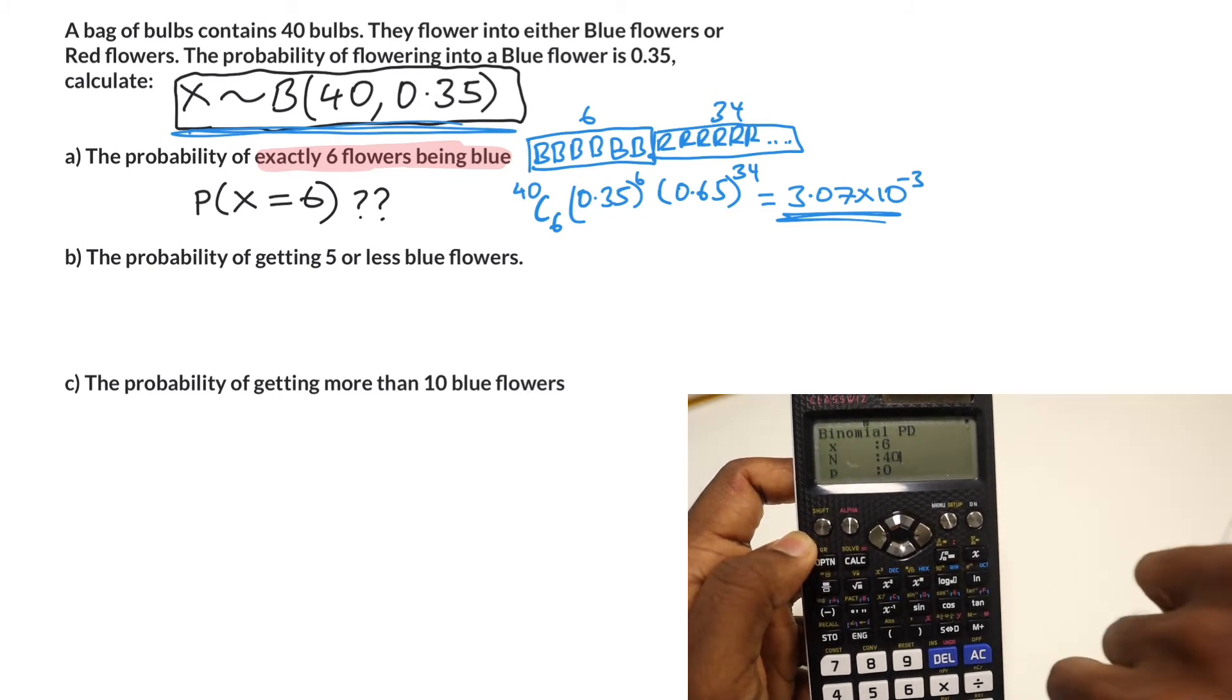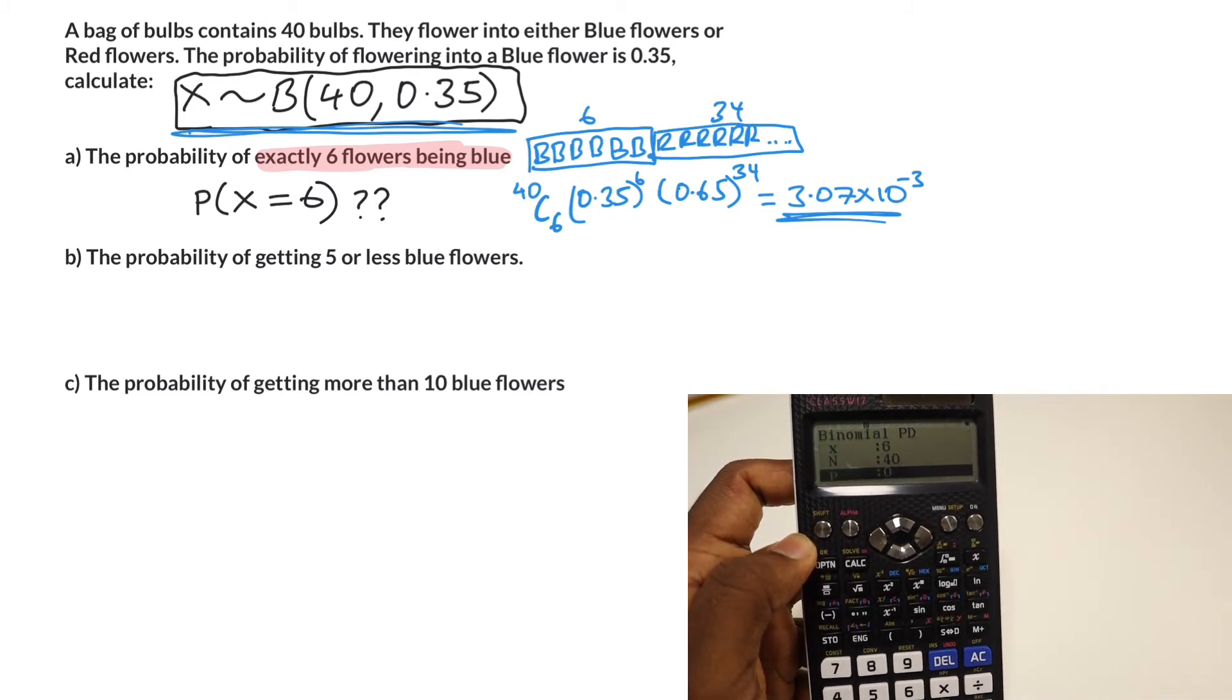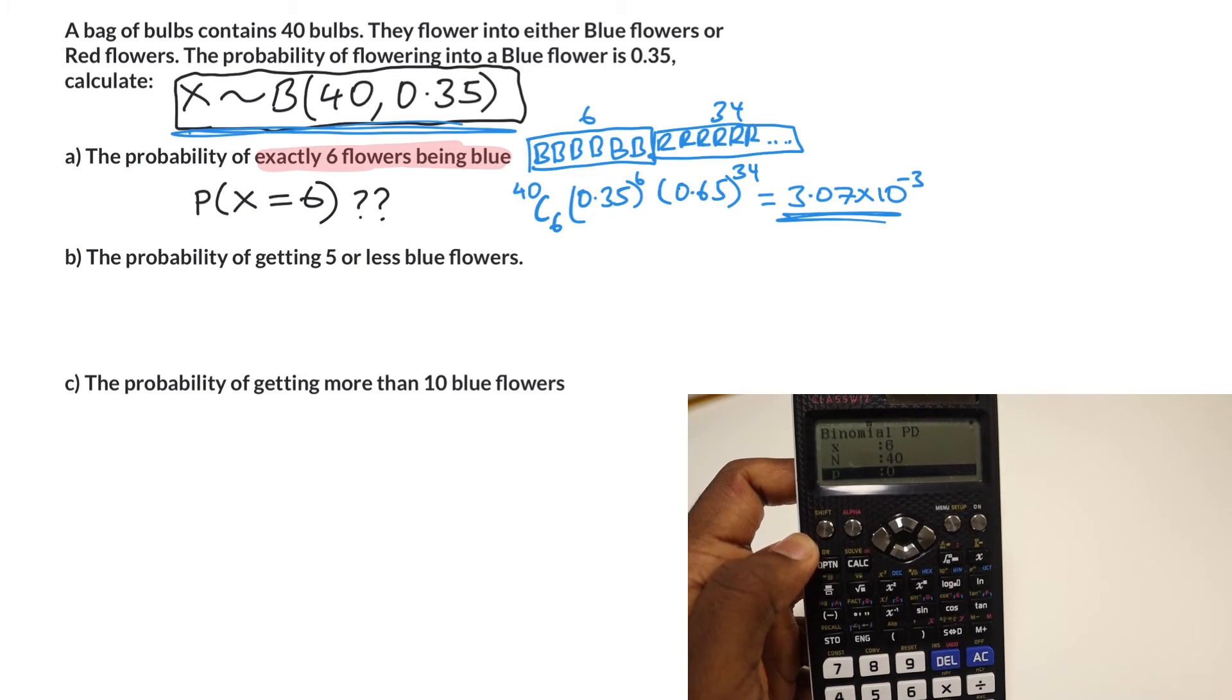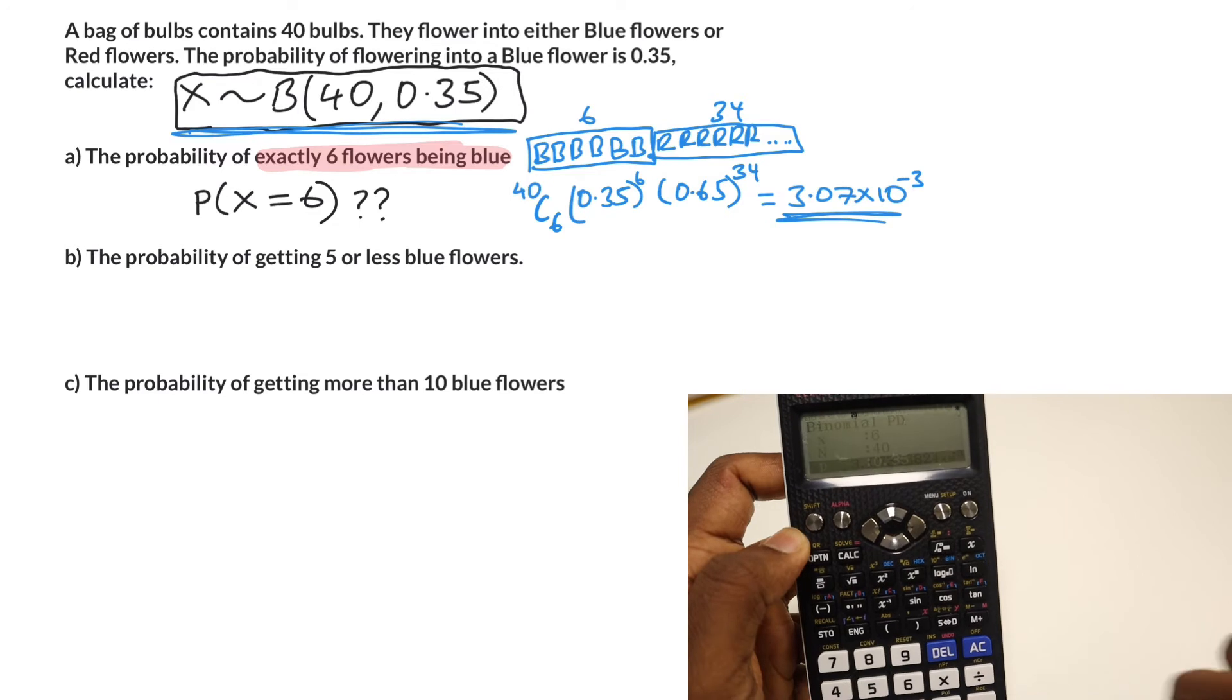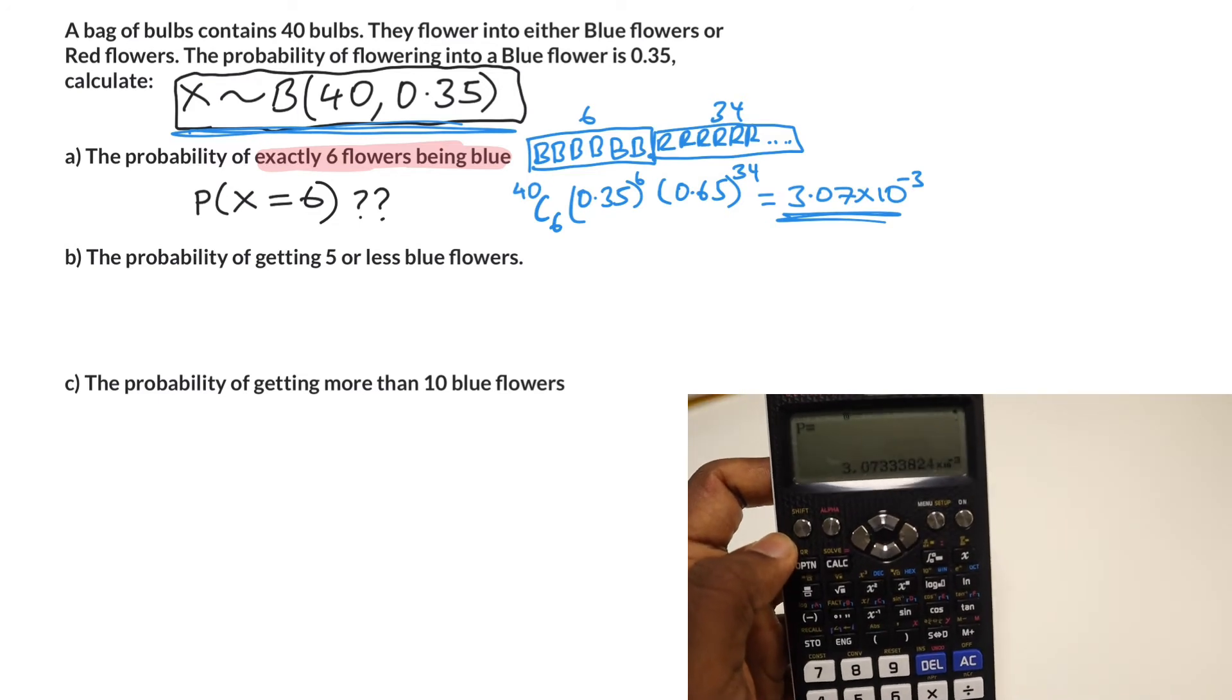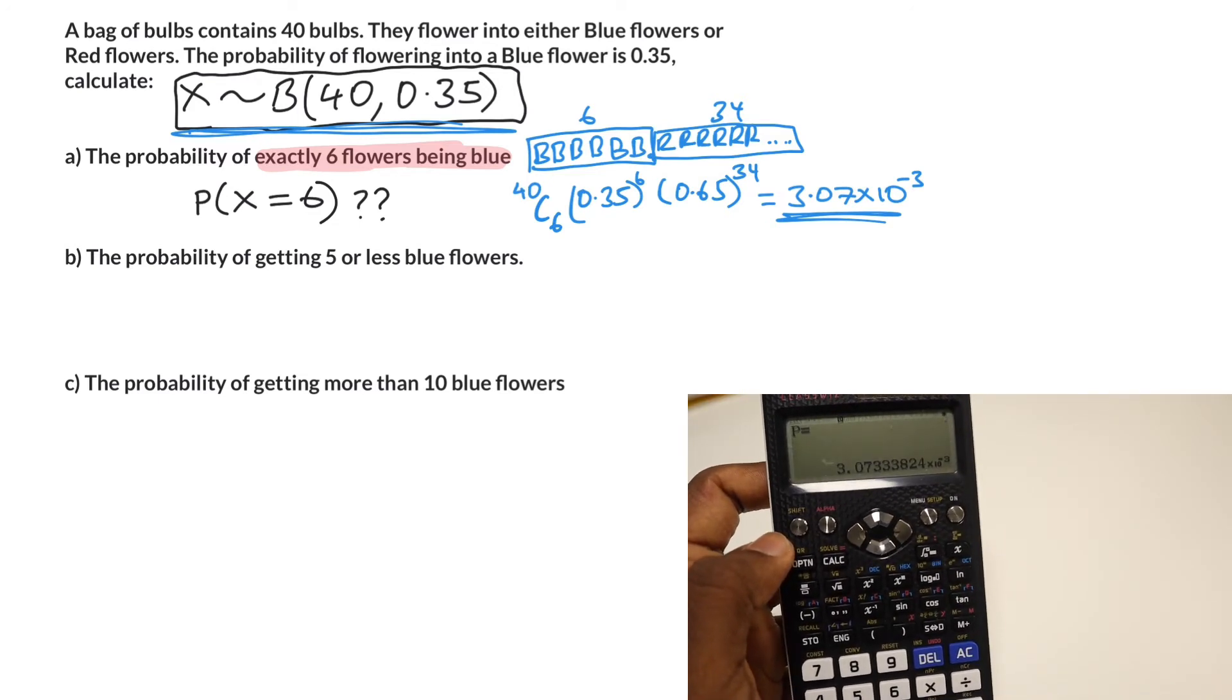n is the total number of bulbs, that's going to be 40 in our case, and p, which is the probability of being blue, is 0.35. Hit equals one more time and there you go. You get the exact same probability, 3.07 times 10 to the minus 3.